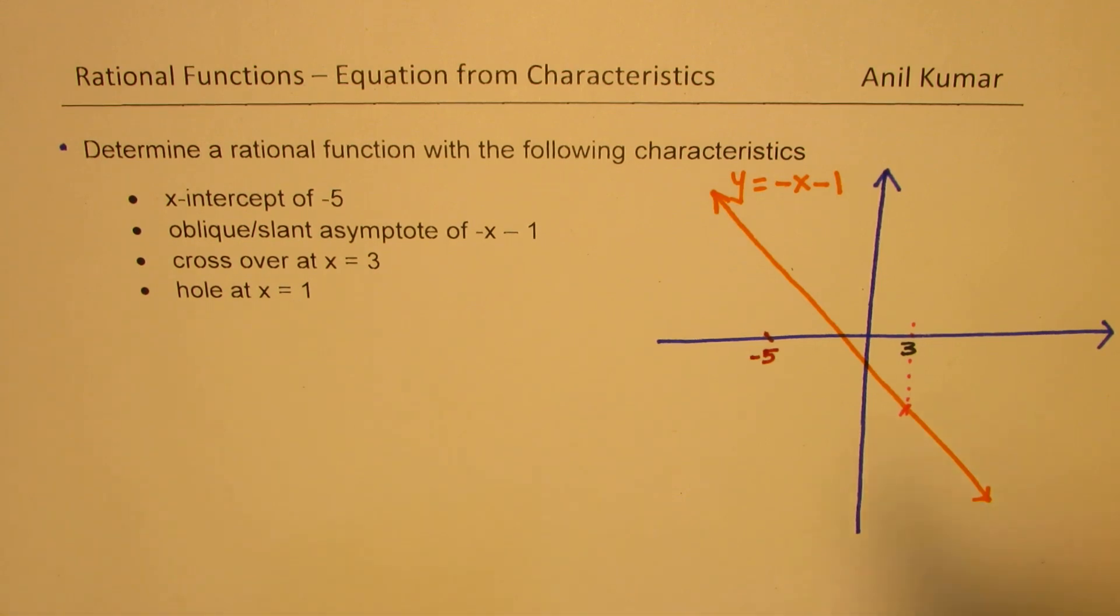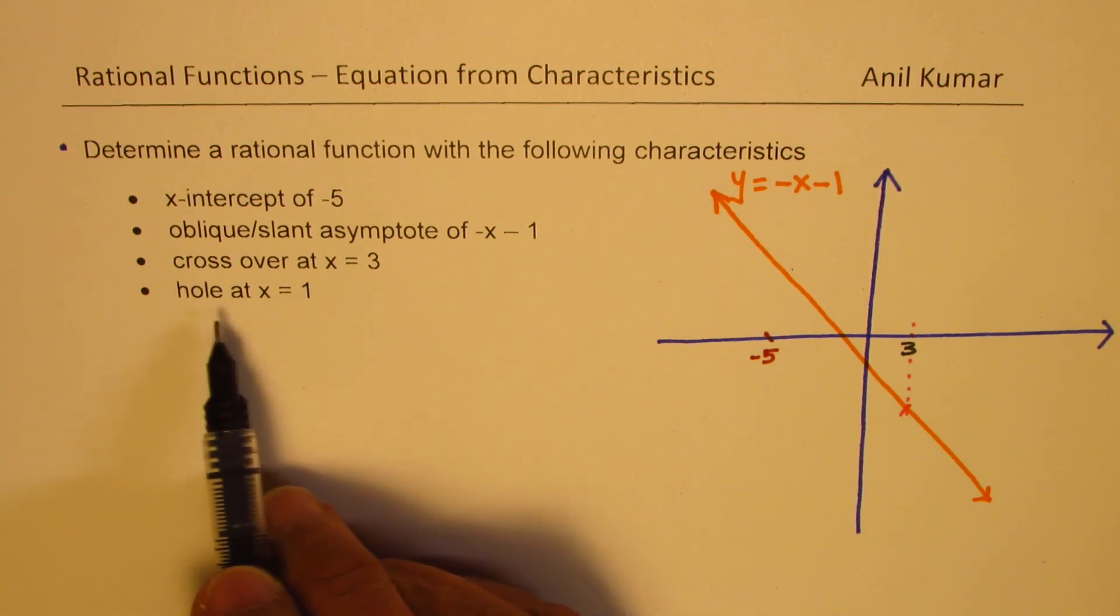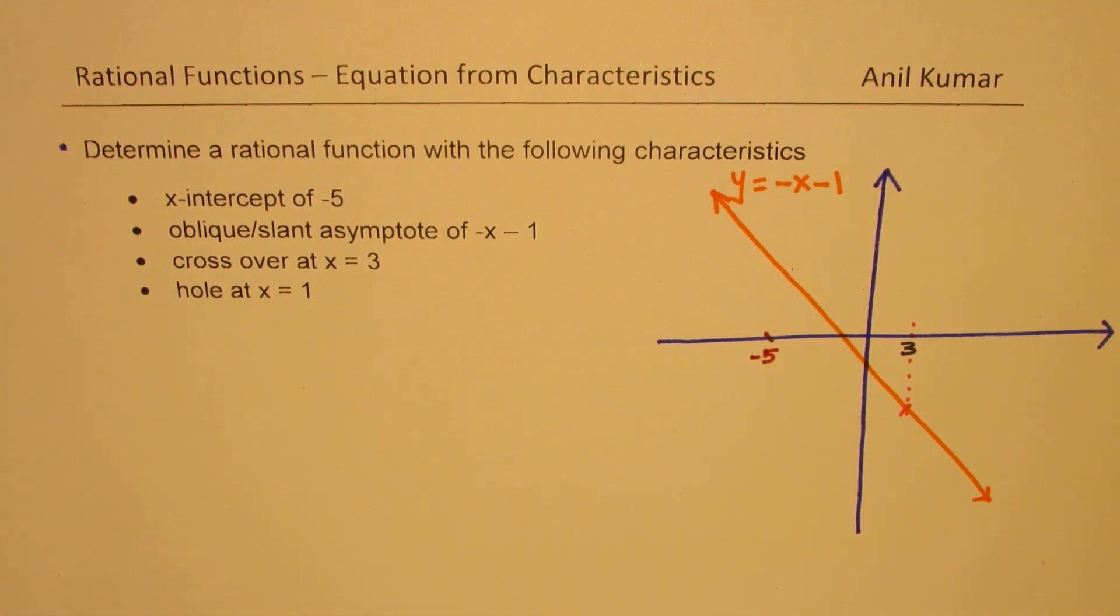Hole at x equals 1, well, not a difficult issue. By having a factor of x minus 1 in numerator and denominator, we can always get this hole. Now, let's try to see how to solve this question.